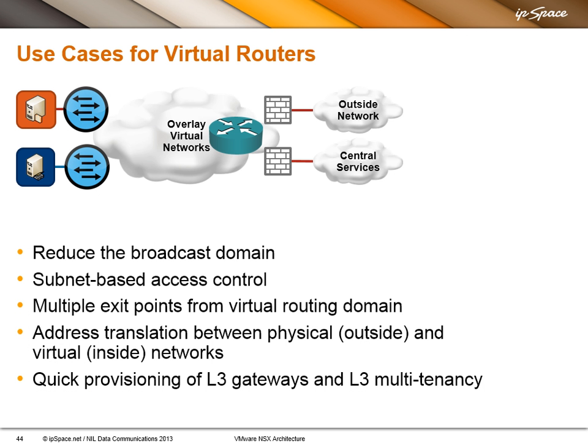The first question: why would you need Layer 3 gateways? There are a number of reasons. You might want to reduce the broadcast domain — at least in NSX for multiple hypervisors, you still have ARP broadcasted within the Layer 2 segment, so you may want to reduce the broadcast domain size. Or you have access control based on subnets. Or you might want to have multiple exit points from your virtual domain and you don't want to have static routes on your hosts. Or you do address translation — NAT between the overlay and the outside network.